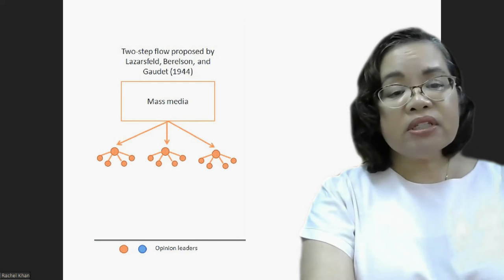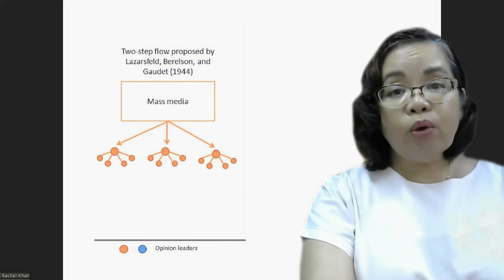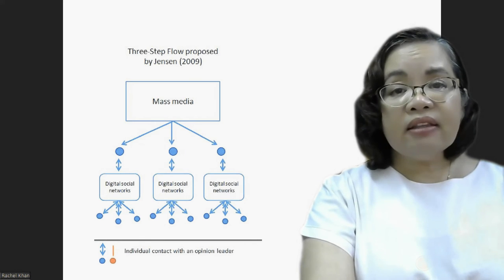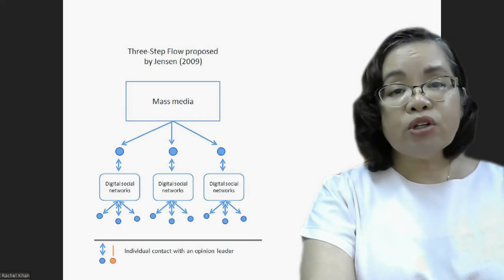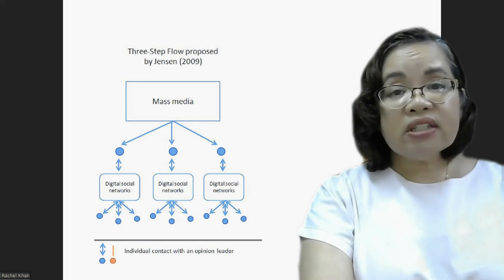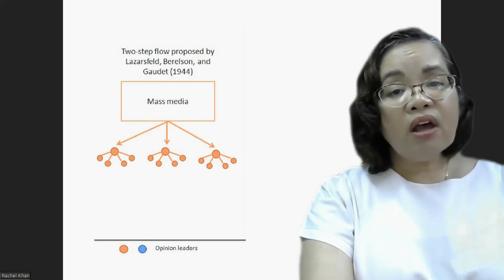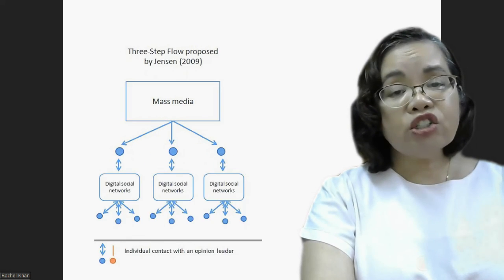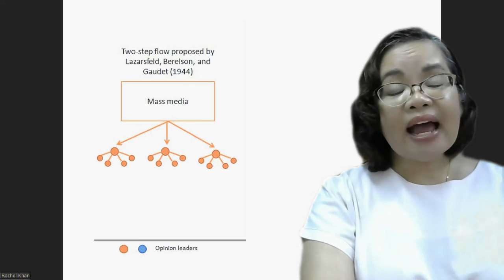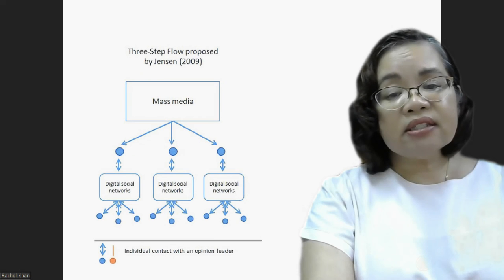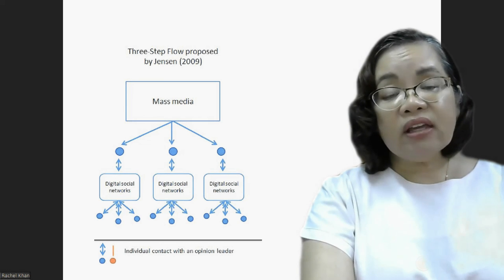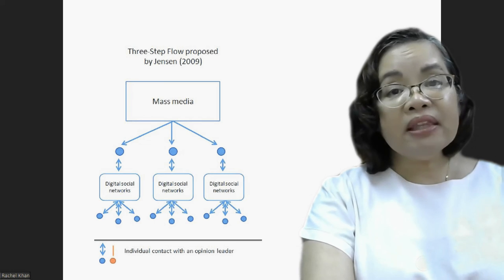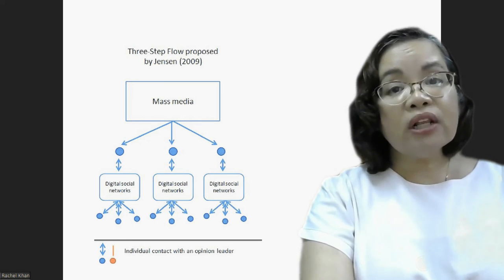In this particular slide, we see first the original model of the two-step flow theory by Lazarsfeld and company, and the updated three-step flow proposed by Jensen in 2009, already with the adoption of digital media. The original theory was developed with the idea of traditional mass media, such as newspapers, radio, and television, that had a more direct influence on the audience, as against digital media, where it is a targeted audience that could vary, and where you now have a mediator mediating the media through social influencers.